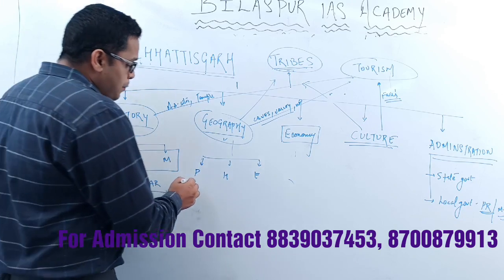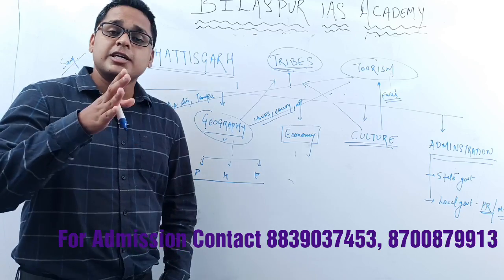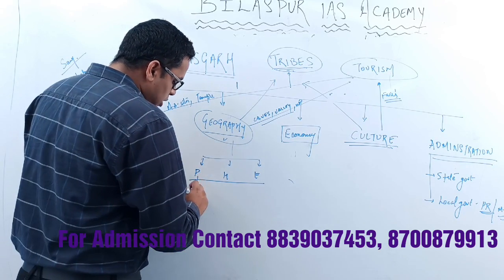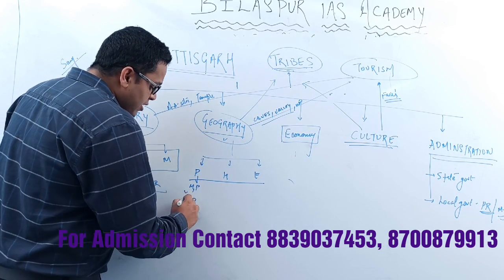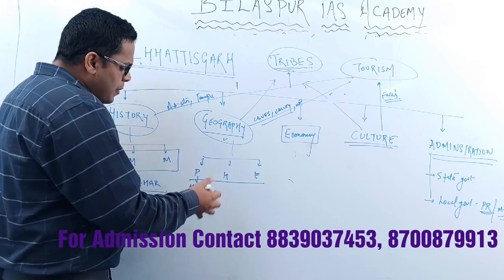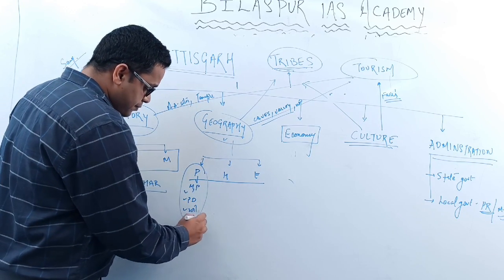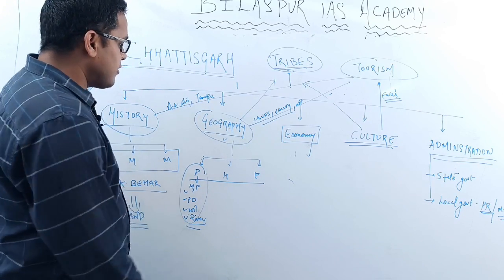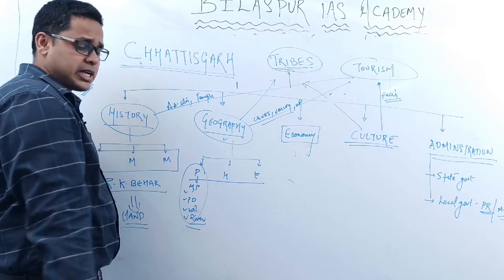Geography becomes a very important section when you consider Chhattisgarh, because Chhattisgarh's geography is half of your Chhattisgarh syllabus. It includes physical geography, various mountains, plains, and different physical divisions of Chhattisgarh. We will talk about various soils found in different regions of Chhattisgarh and various rivers. We will talk about caves, valleys, mountains — all in your tourism section and also in your physical section.